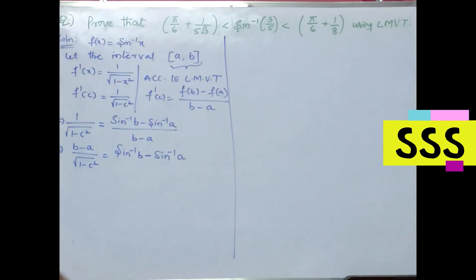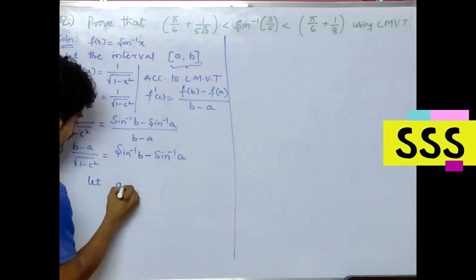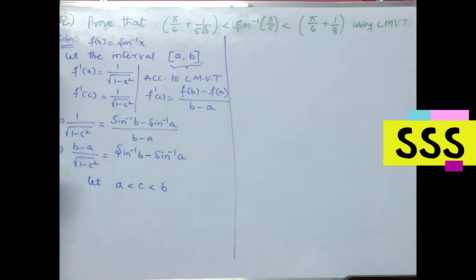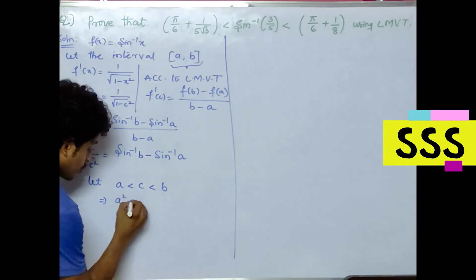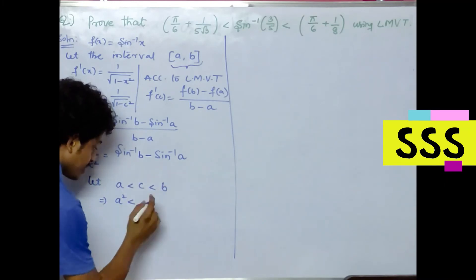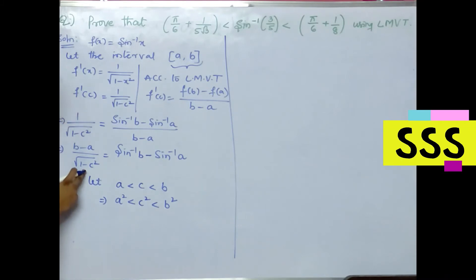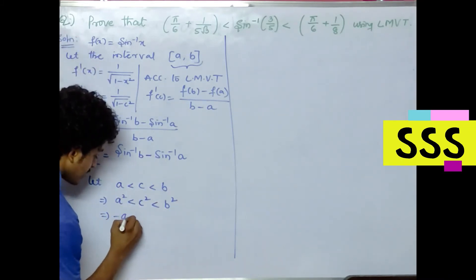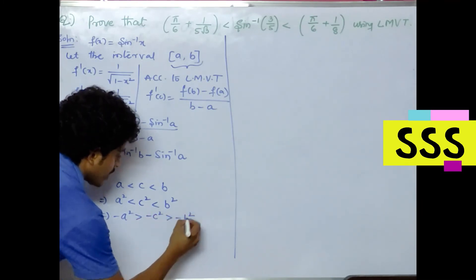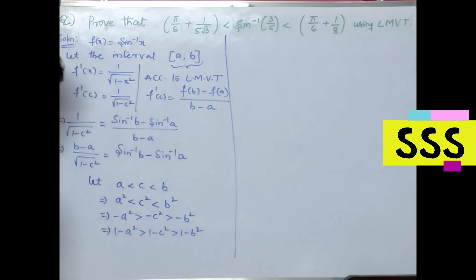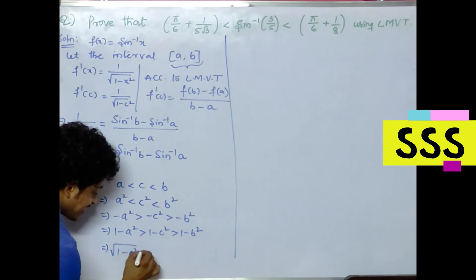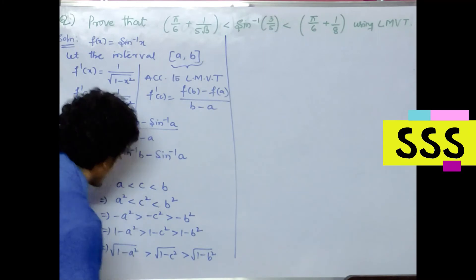Let a < c < b. Now we manipulate the inequality. Squaring: a² < c² < b², so −a² > −c² > −b². Adding 1: (1 − a²) > (1 − c²) > (1 − b²). Taking square roots: √(1 − a²) > √(1 − c²) > √(1 − b²). Taking reciprocals reverses the inequality: 1/√(1 − a²) < 1/√(1 − c²) < 1/√(1 − b²).